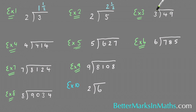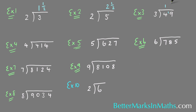Example 3: how many 3s in 49? How many 3s in 4? There's 1 with 1 left over. How many 3s in 19? There's 6 with 1 left over, and that would be 1 over 3 this time — so 16 and 1 third.